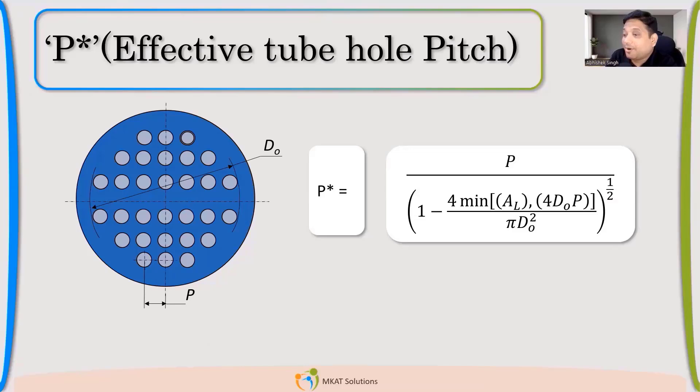Because finally, I want to minimize the thickness, right? So whatever extra contribution is given by that tube, I want to take it. So that I can minimize. That is the reason we are trying to calculate P*.